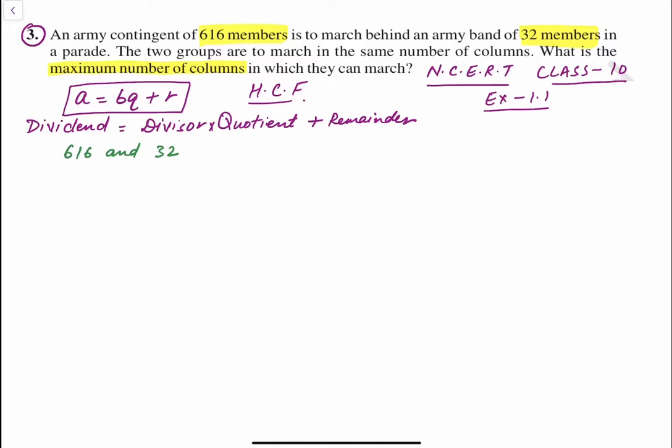We have to find the greatest number between 616 and 32. 616 is greater than 32, so we are going to put 616 as the dividend and 32 will remain as the divisor. Now we will do simple division.